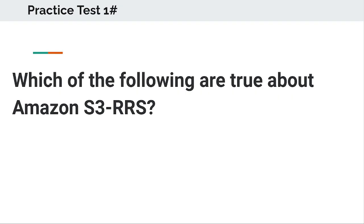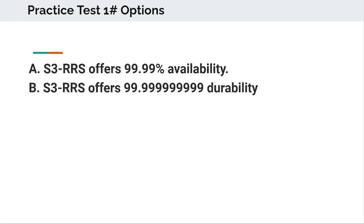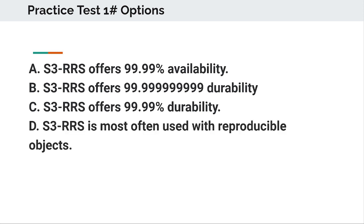Which of the following are true about Amazon S3 RRS? Option A: S3 RRS offers 99.99% availability. Option C: S3 RRS offers 99.99% durability. Option D: S3 RRS is most often used with reproducible objects.